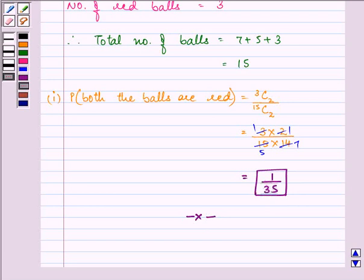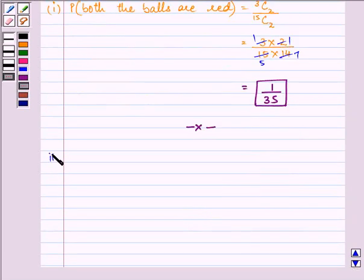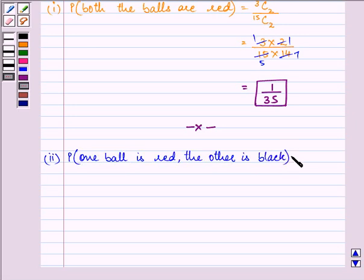Now, here we need to find out the probability that one ball that we have taken out is red and the other is black. Right, so the probability of occurring this event will be equal to 3 into 5 into 2 divided by 15C2.